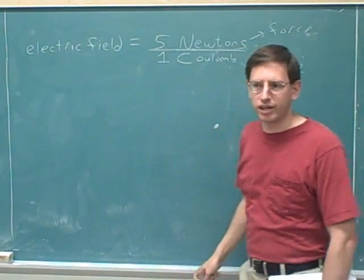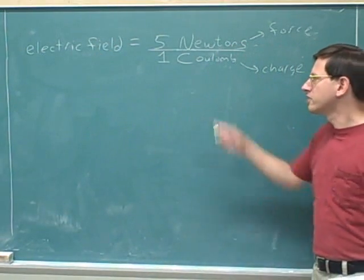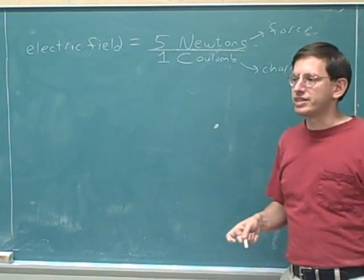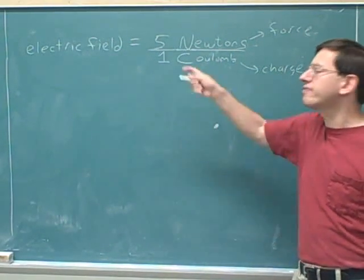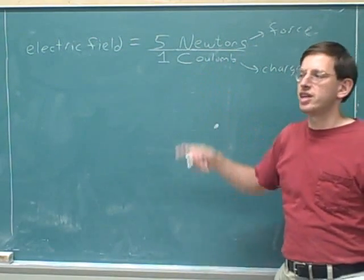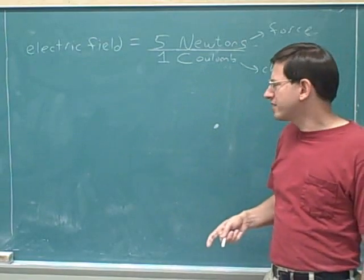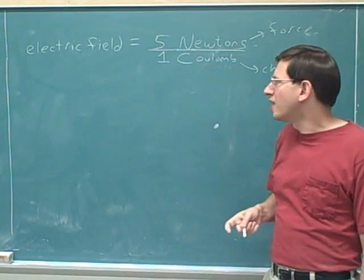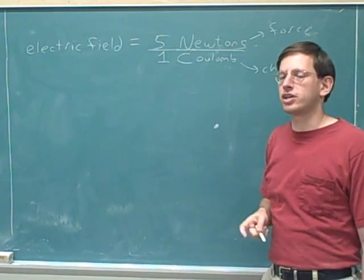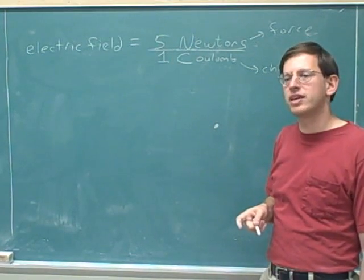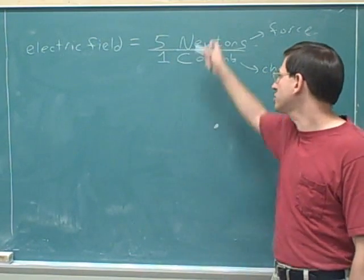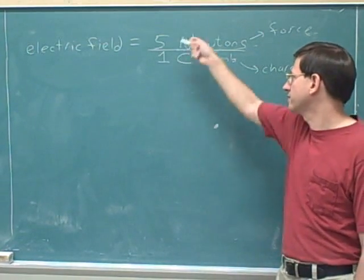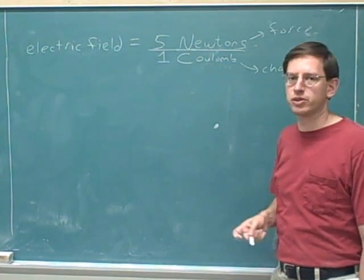Now we're starting to see why it's useful to have this concept of electric field. Many of you might not have encountered this concept before, but in the second semester of physics you definitely will. This is one of the more confusing concepts in physics, but there's no reason for electric field to be so confusing if you keep in mind that it has a ratio unit. That makes it much easier to understand what it means when we say the electric field is five newtons per coulomb.